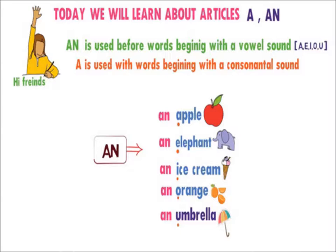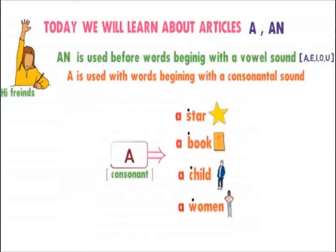An apple, an elephant, an ice cream, an orange, an umbrella — ये सब vowel से शुरू होने वाले words हैं इसलिए इनसे पहले 'an' आता है।